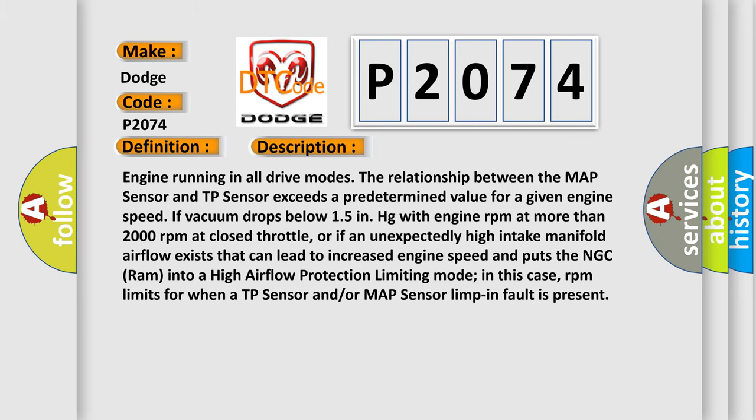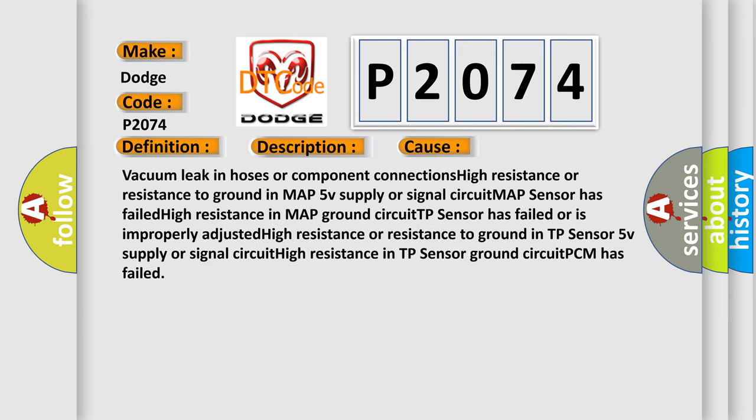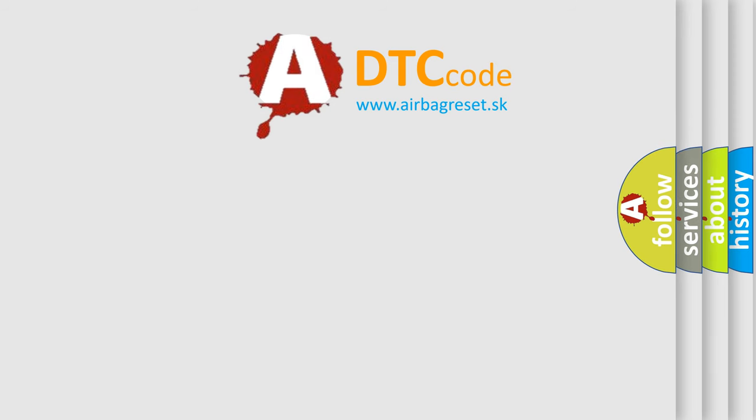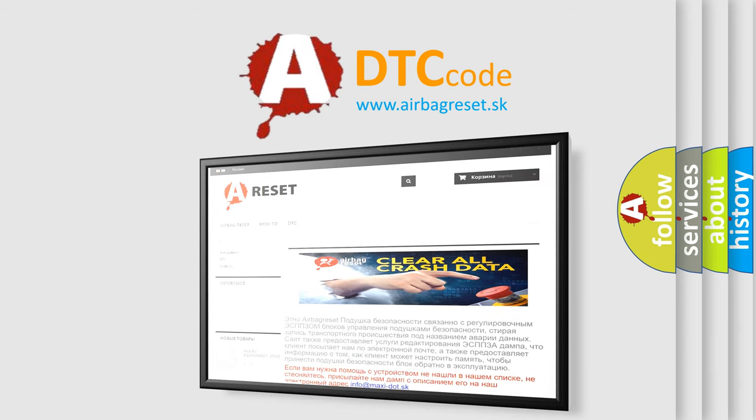This diagnostic error occurs most often in these cases: vacuum leak in hoses or component connections; high resistance or resistance to ground in MAP 5V supply or signal circuit; MAP sensor failure; high resistance in MAP ground circuit; TP sensor failure or improper adjustment; high resistance or resistance to ground in TP sensor 5V supply or signal circuit; high resistance in TP sensor ground circuit; or PCM failure. Thank you for your attention and stay tuned for the next video.